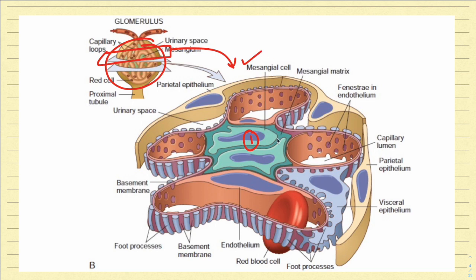The mesangial cells are surrounded by an extracellular matrix called the mesangial matrix. So this is the number one structure and the mesangial matrix is the number two structure. Just beneath the mesangial matrix, what you are going to see is the endothelium.